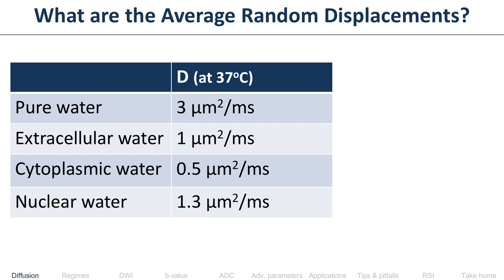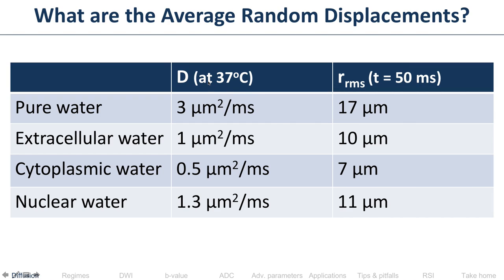He was 25 years old — so probably most of us are over 25. What are the diffusivity values of different things at 37°C? Pure water is 3 micrometers squared per millisecond. In MRI we typically use diffusion times of about 50 milliseconds, giving motions of pure water of about 17 microns, extracellular water of 10 microns, cytoplasmic water of 7 microns, and nuclear water of 11 microns. As an order of magnitude, we're looking at motions of about 10 microns.